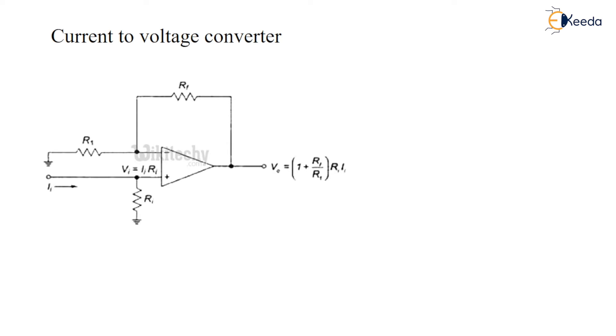We know the input impedance of op-amp is very high. Therefore, the incoming current through these two terminals are very low. Due to virtual ground concept, V1 and both terminals are at virtual ground.